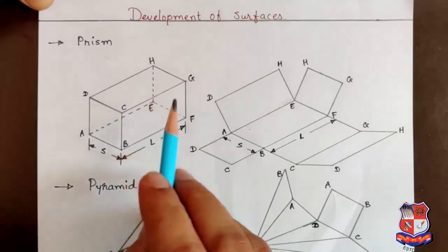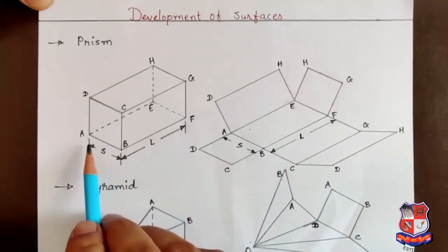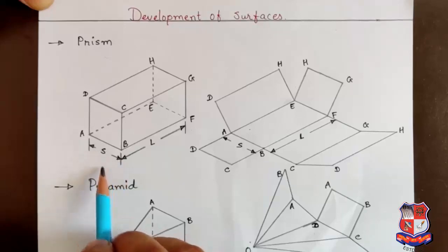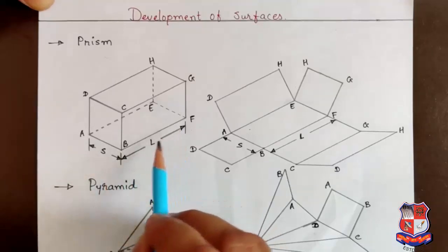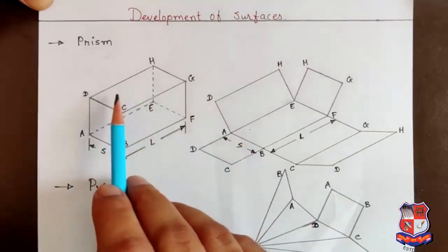This square prism, we will open entirely here. Suppose one side is S, and the length or height is L. The total number of faces is 4.